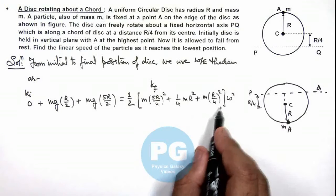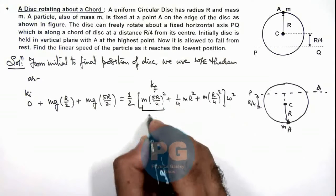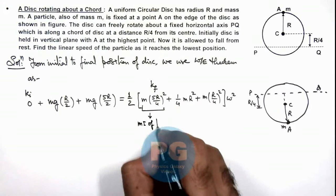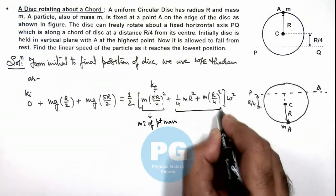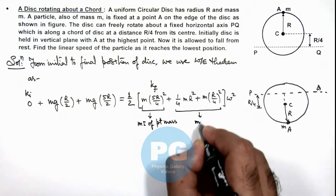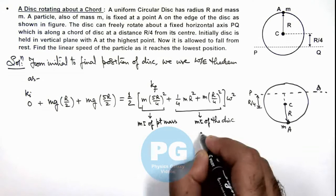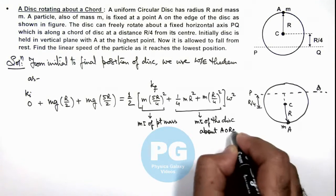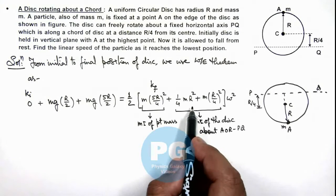So this is the moment of inertia of this system, where this can be considered as MI of point mass, and this section is the moment of inertia of the disc about axis of rotation PQ, which we have calculated by using parallel axis theorem.